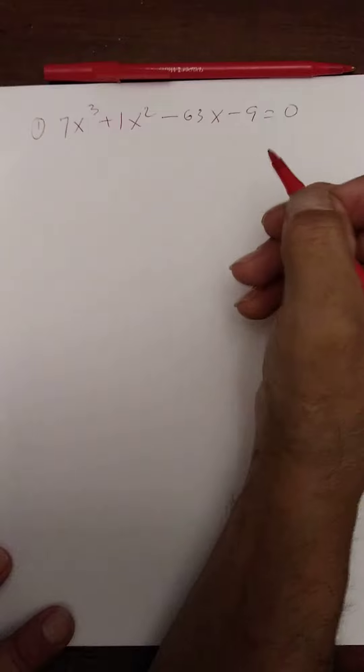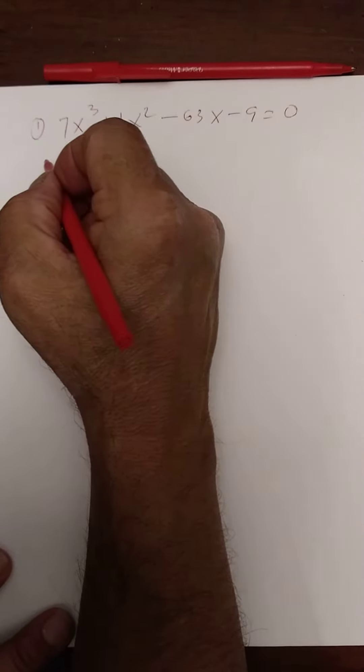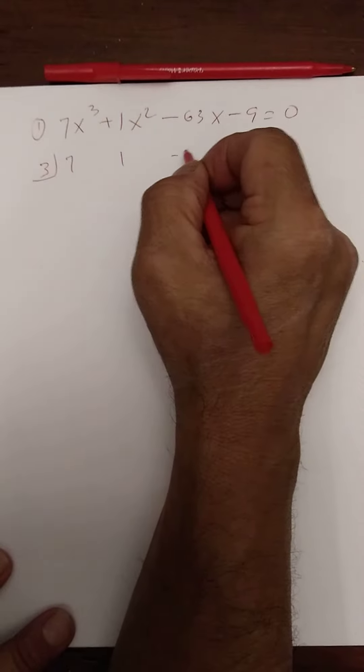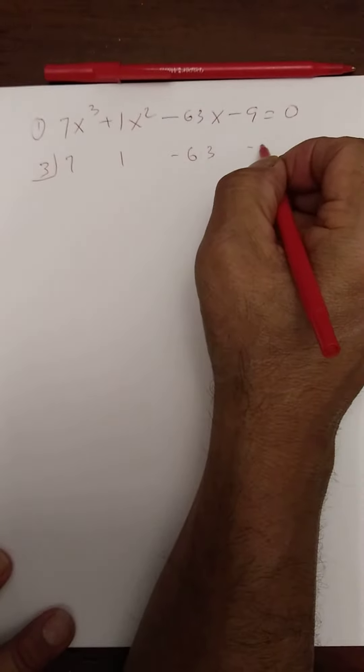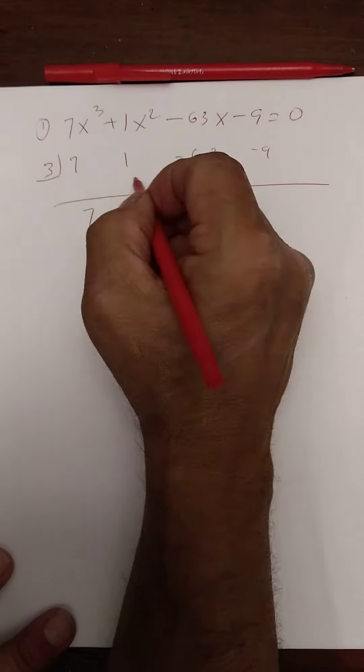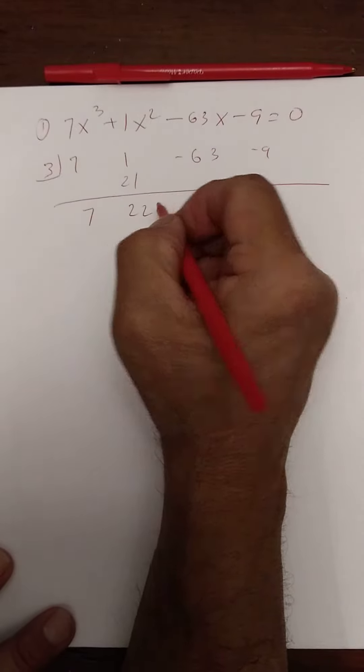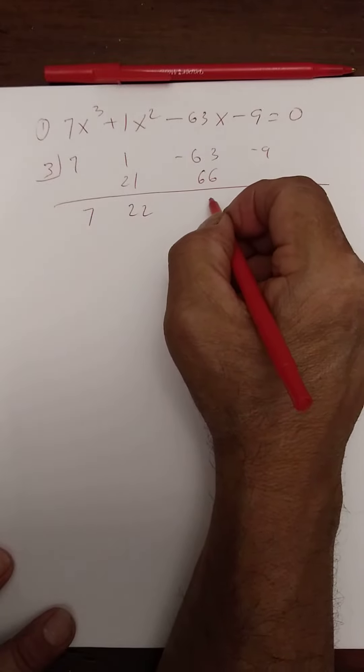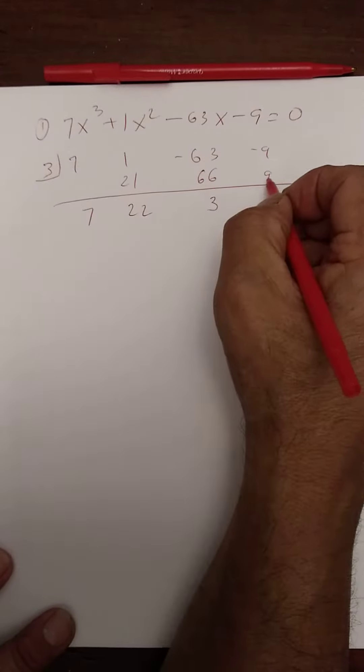Using synthetic division, let's try 3. So 7, 1, -63, -9. Bring the 7 down. That's 21, that's 22, 22 times 3 is 66 minus that, it's going to be 3. 3 times 3 is 9, 9 minus 9 is zero remainder.